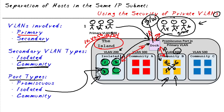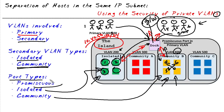That brings us to port types. An isolated port is a port allocated as part of an isolated secondary VLAN. A community port is a port associated with a community secondary VLAN. A promiscuous port, which is always in the primary VLAN, is willing to talk to any other port inside the private VLAN configuration — it's promiscuous, meaning it'll talk to anybody. The purpose of all this is to restrict which ports in the same IP subnet are allowed to communicate with each other through our implementation of private VLANs. Now let's take a couple of moments and show you how to implement this on a Cisco switch.